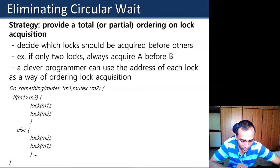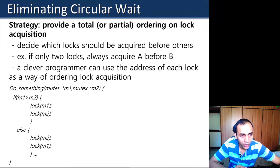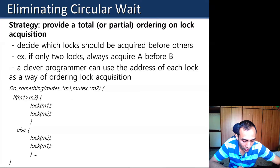In yesterday's class we discussed strategies to avoid each of these four conditions — these are called prevention techniques. Circular wait can be avoided by ensuring a fixed ordering in which different locks are acquired. When locks must be acquired, the order should remain the same regardless of which thread calls which function. One way to do this is by comparing the addresses of the locks and always acquiring, say, the higher-address lock first.